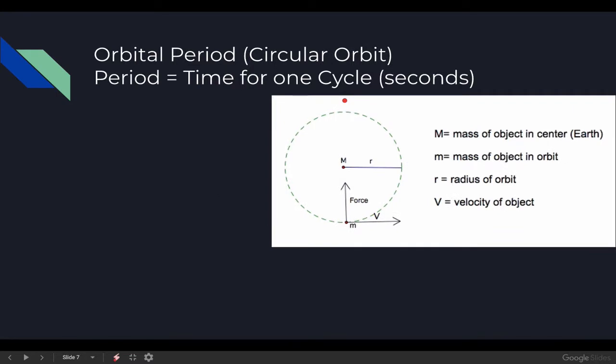Now that we have an expression for the velocity of a satellite in a circular orbit, we can now find an expression for the orbital period. Period is defined as the time in seconds for one complete cycle. So that's either something that is revolving around something else, something that is oscillating back and forth. We'll talk a lot more about this idea of period later in our simple harmonic motion unit.